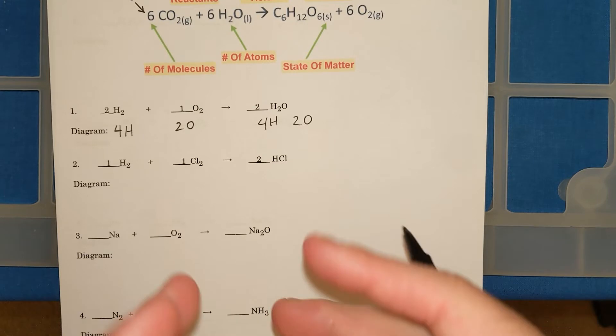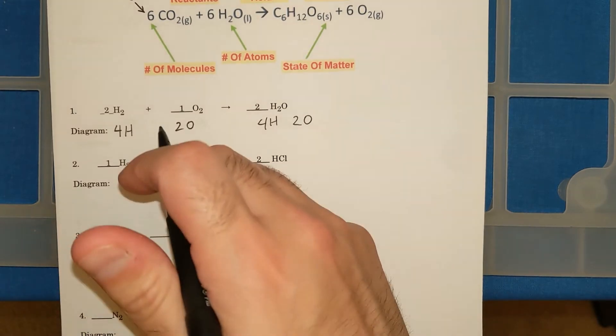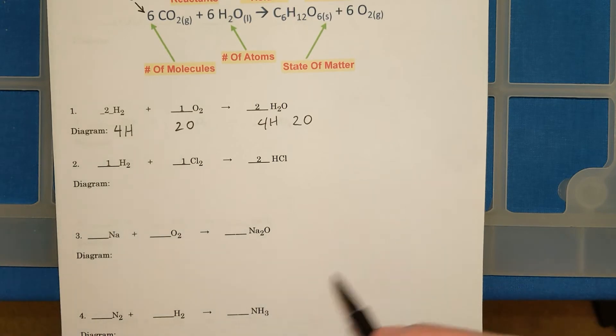So just in case you're given an equation and asked if it's balanced, you can count using subscripts and coefficients to figure out if you have an equal number of atoms on both sides.